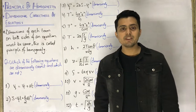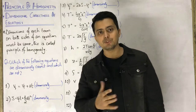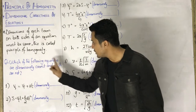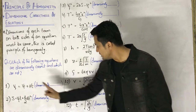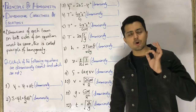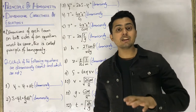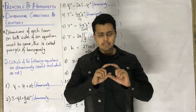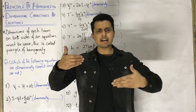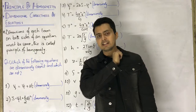Now let's move to the next part of this video, where we need to prove which equations are dimensionally correct and which are not. I have already written some things here to save time. The question is: which of the following equations are dimensionally correct and which are not? If the dimension of the left-hand side equals the dimension of the right-hand side, we call that equation dimensionally correct — i.e., dimensionally consistent.